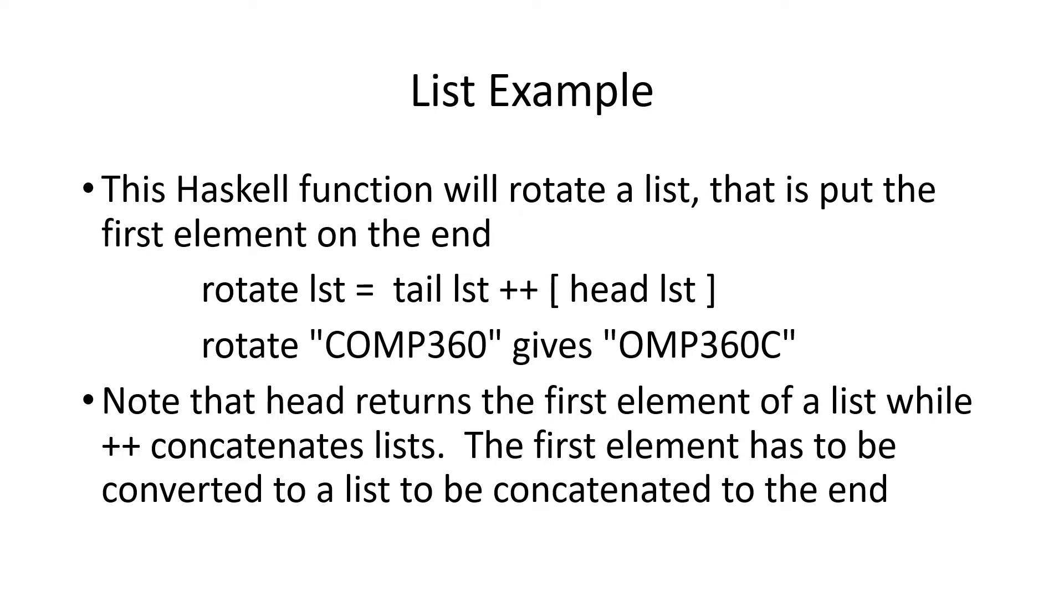Here's an example of a function that returns the list rotated around by one character. That is, the first element is put on the end and all the others move forward. And you can see we define rotate list to be the tail of the list, concatenated to bracket, head list bracket. The brackets are important because taking the head of a list returns an element, not a list of elements.